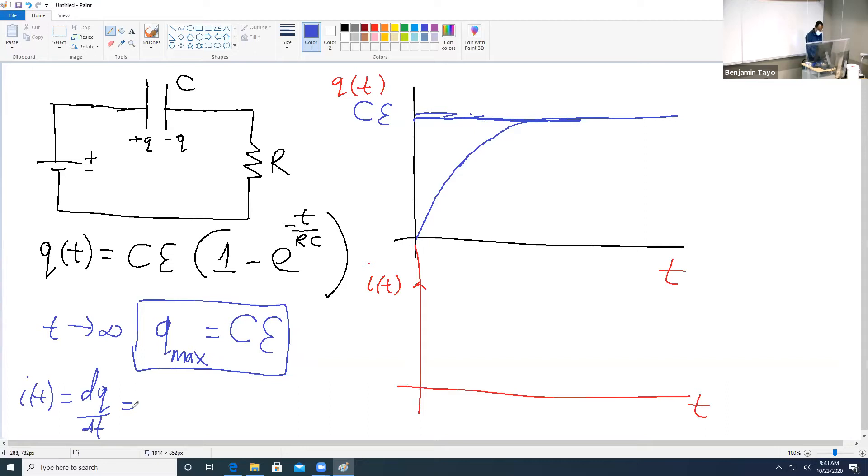So if you take the derivative of this function here, you get Cε times one over RC. Now the R is going to cancel, the C is going to cancel. So this is ε over R. Now if you plug this at t equals zero, you notice that there is a current and then eventually this will go to zero.